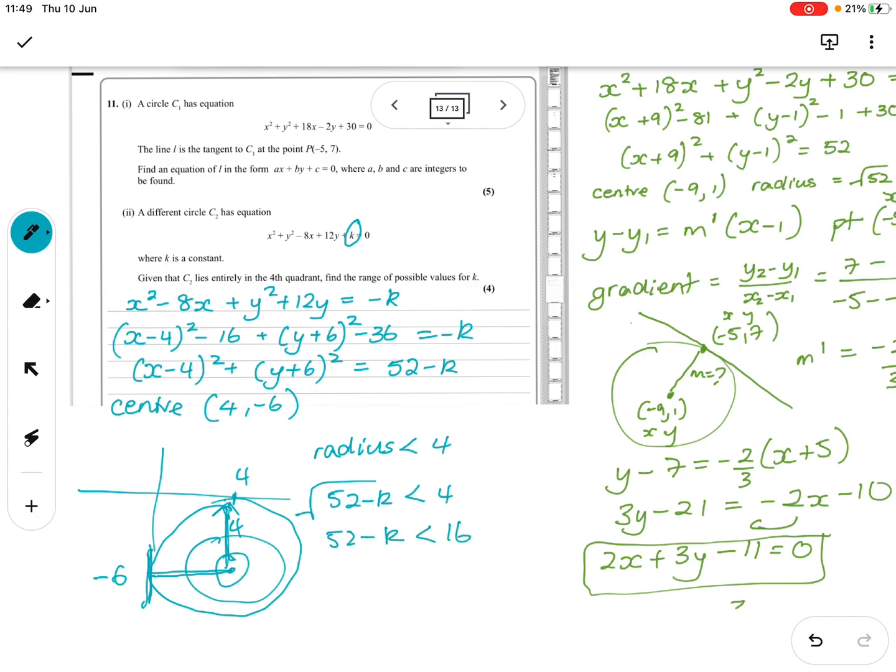So that means the square root of 52 minus k has got to be less than 4. So 52 minus k has got to be less than 16. So 52 minus 16 has got to be less than k. 52 minus 16. So k has got to be less than... No. 36 is less than k.